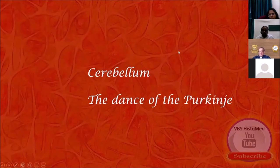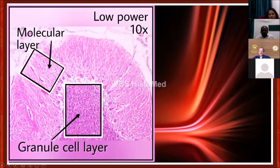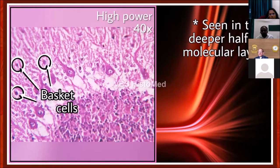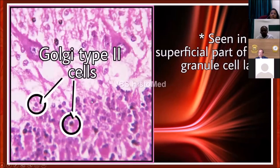Next, cerebellum and the dance of the Purkinje. This is routine: molecular layer, granular layer, and in between, beautifully seen as basket-shaped or flask-shaped cells, are the Purkinje cells. You can see the dendrite dividing into two very beautifully shown here. Other than the Purkinje cell, as you move towards the upper superficial layer, you can also identify a few basket cells. In the granular layer, Golgi type 2 cells are very clearly visible. These are H&E only.